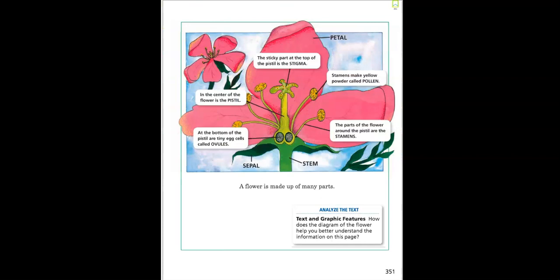A flower is made up of many parts. There's a petal, stigma, pistil, pollen, ovules, stamen, sepal, and stem.